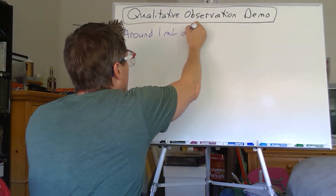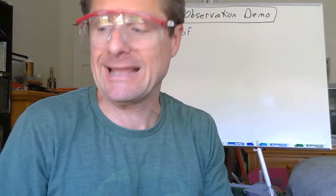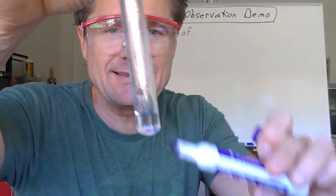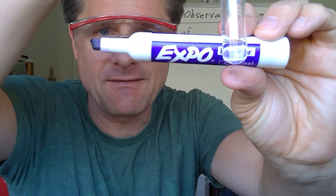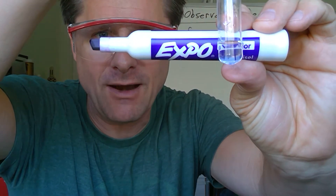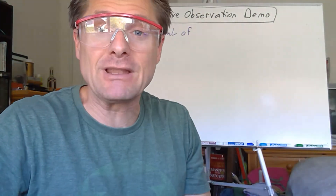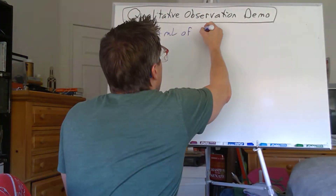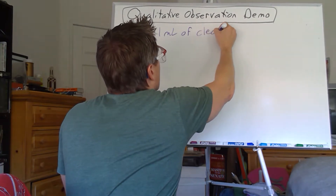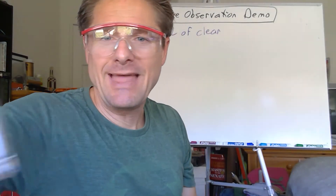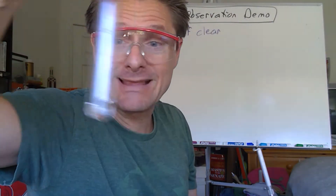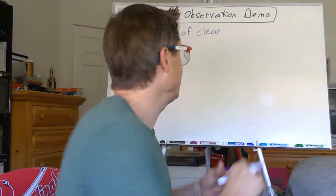Next on our list after amount is clarity. I can see fine detail through it — I can read words through there — so that would definitely be 'clear.' After clarity is color: it has no color, so that is 'colorless.' Note that 'clear' and 'colorless' are two different things.